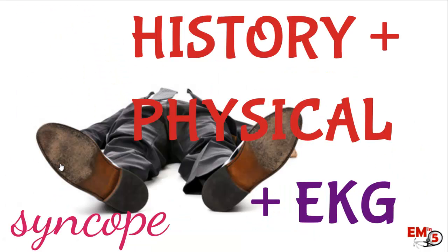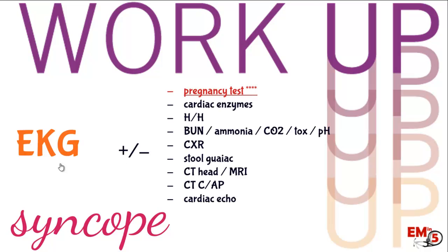Most of the workup for syncope is in the history and physical. Get every patient an EKG. After that, it's up to you based on what you're concerned about. Get young females a pregnancy test. If the patient had chest pain or palpitations, get cardiac enzymes or a cardiac echo. If they're having hypoxia and severe shortness of breath, maybe they need a CT-PE scan. If they're having a severe headache or any focal deficits, they need a CAT scan. But none of these are necessary in every syncope patient.